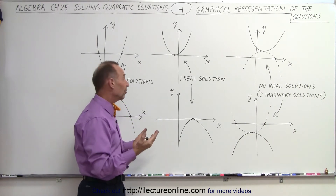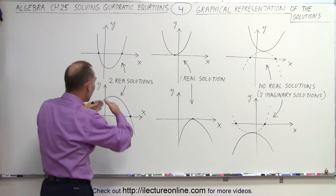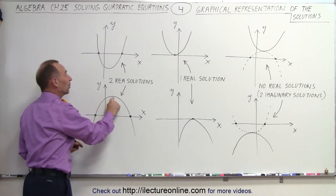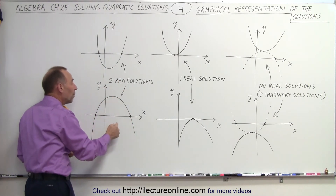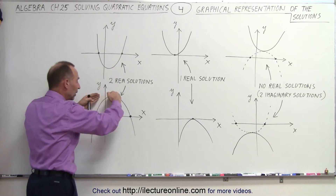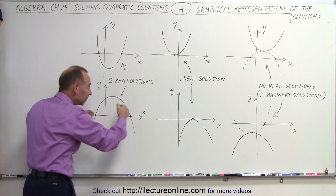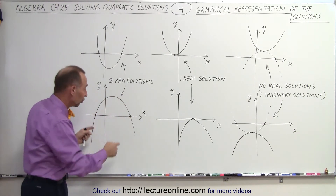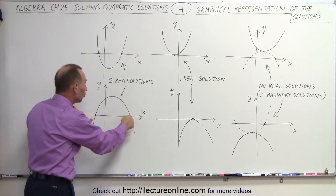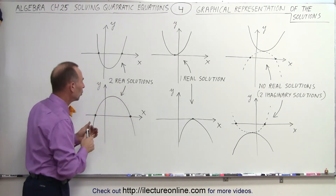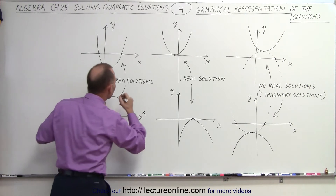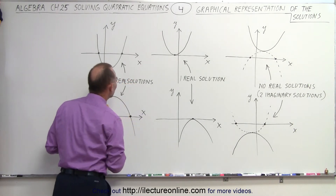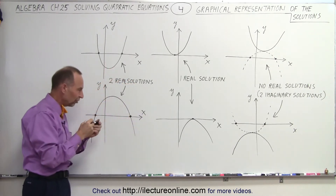We can also have the parabola open downward, and of course if the highest point on the parabola is above the x-axis, we can again see that the parabola will cross the x-axis in two places, so there will be two real solutions.